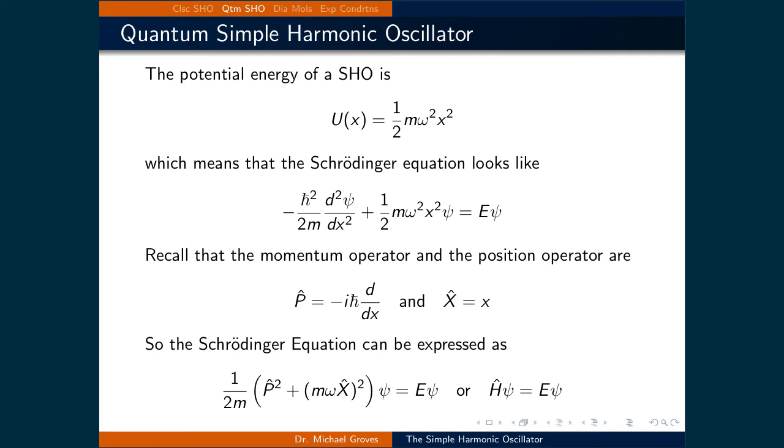In the quantum world instead of using Newton's second law we will use the Schrödinger equation. The potential used for a simple harmonic oscillator is a parabola which is expressed as (1/2)mω²x². Substituting that in the Schrödinger equation gives -ℏ²/2m × d²ψ/dx² + (1/2)mω²x²ψ = Eψ.